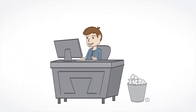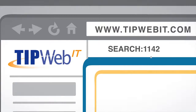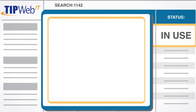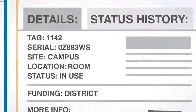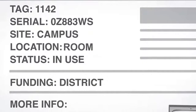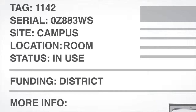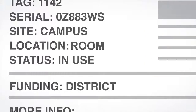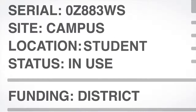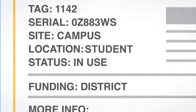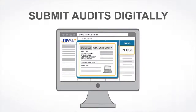Can't find an item? Enter its tag number or serial number in the search box and the item's history and details appear, from its last known location down to its funding source and life expectancy within the district. You can quickly and easily move items to another room, distribute and collect items from individuals, and submit your audit to the district digitally.